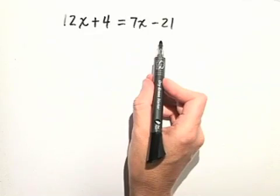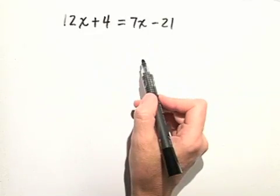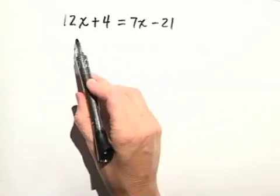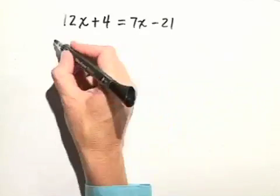So we need to decide which side we want to put the variable on and which side we want to put the constant on. Let's go ahead and put the variable on the left-hand side in this case. So we'll subtract 7x from both sides.